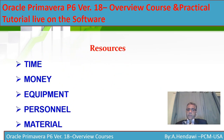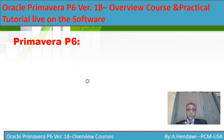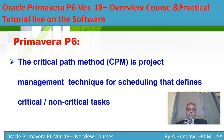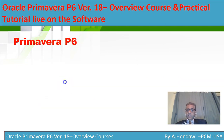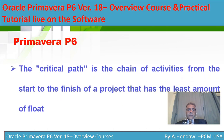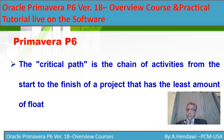In Primavera you're going to manage important resources like money, time, equipment, personnel, and materials. The Critical Path Method, CPM, is a project management technique for scheduling that defines critical and non-critical activities. The critical path is a chain of activities from the start to the finish of the project that has the least float — which could be zero — based on the definition and settings.